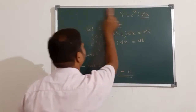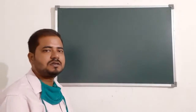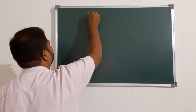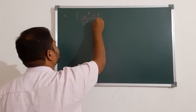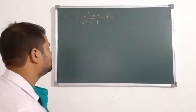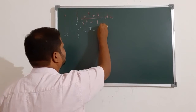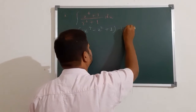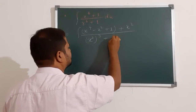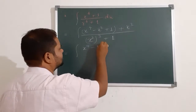Now the next one is very useful for you, so please try to understand. This is the integral of (x to the power 4 plus 1) divided by (x to the power 6 plus 1) dx. For this there is no direct substitution. First of all, we split the numerator: x to the power 4 minus x squared plus 1 and x squared, divided by x to the power 4 minus x squared plus 1.